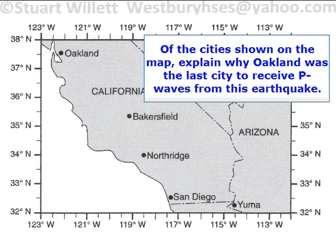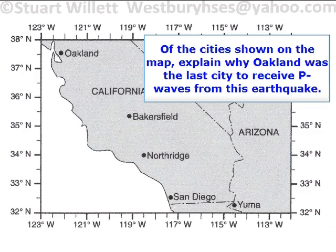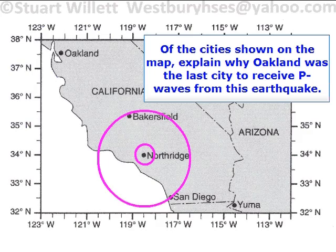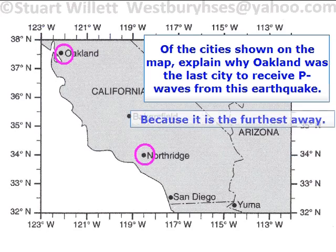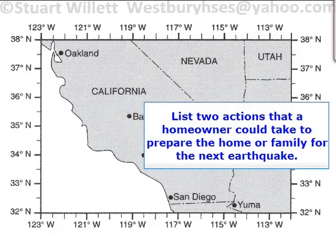Next question: of the cities shown on the map, explain why Oakland was the last city to receive P waves from this earthquake. There are five cities shown — Northridge was the epicenter, Bakersfield and San Diego are about the same distance away, Yuma a little further, but Oakland is clearly the furthest away. Because it's the furthest away, it took the longest for the P wave to arrive.